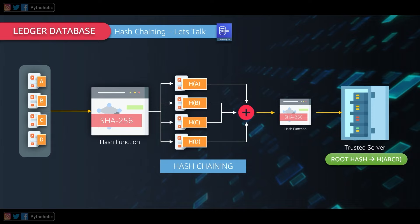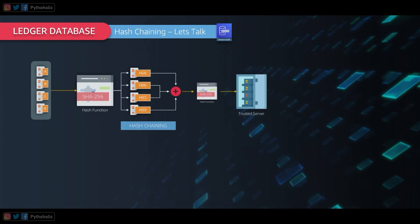For verification, each hash value can collect the hash values of other blocks, compute its own hash, create a root hash, and compare it with the one on the trusted server to ensure data validity. But what if the server gets compromised and you get a compromised response? You won't find the correct root hash on the server. Is there a way for the server itself to prove it has the correct data?